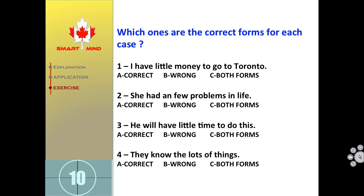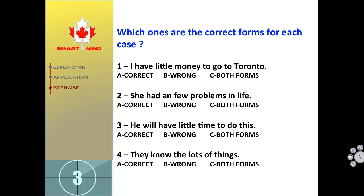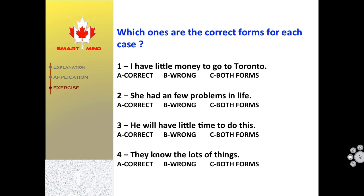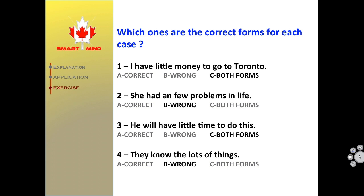Which is the correct form for each case? Number 1: 'I have little money to go to Toronto.' Number 2: 'She had a few problems in life.' Number 3: 'He will have little time to do this.' Number 4: 'They know lots of things.'